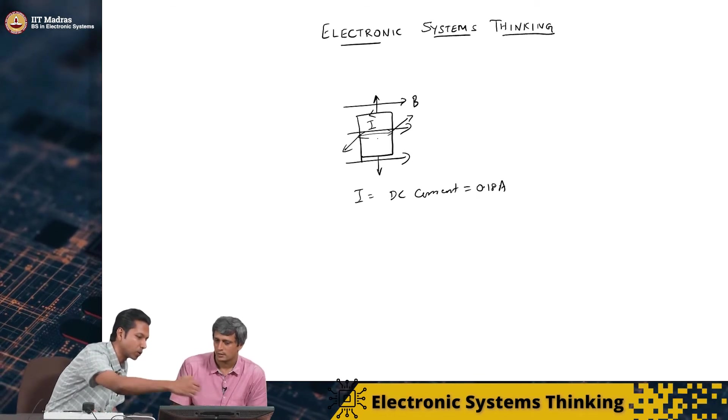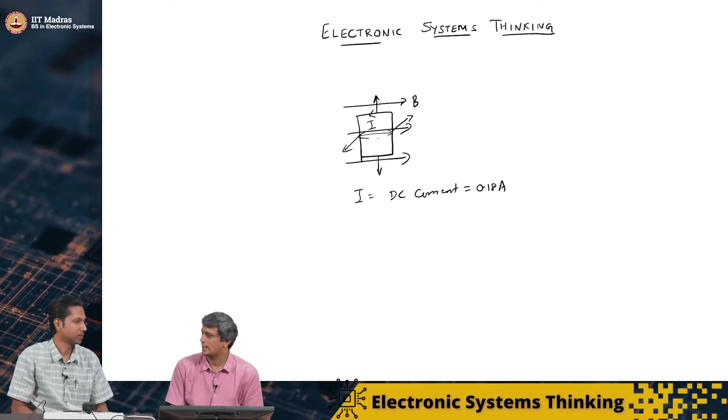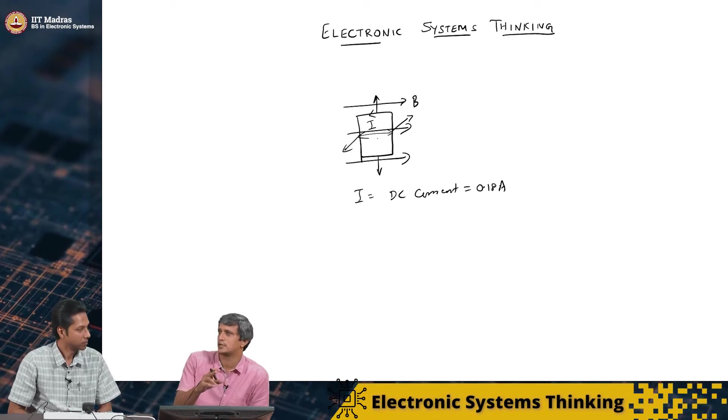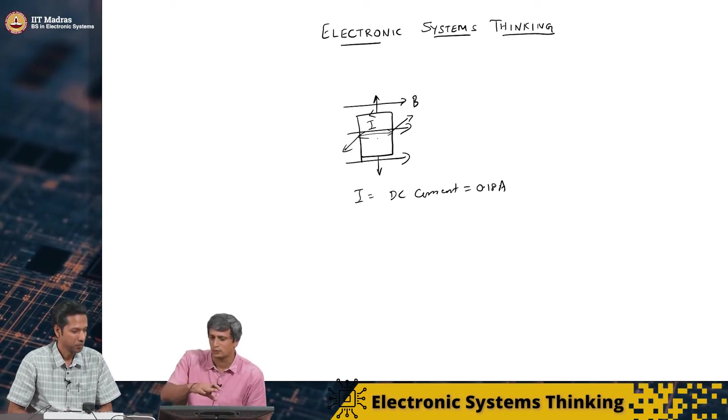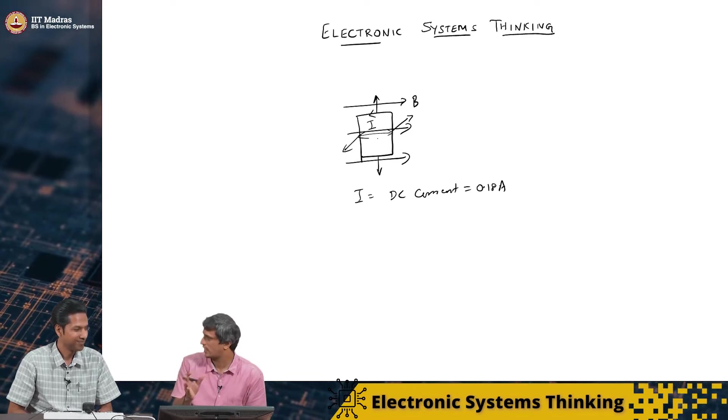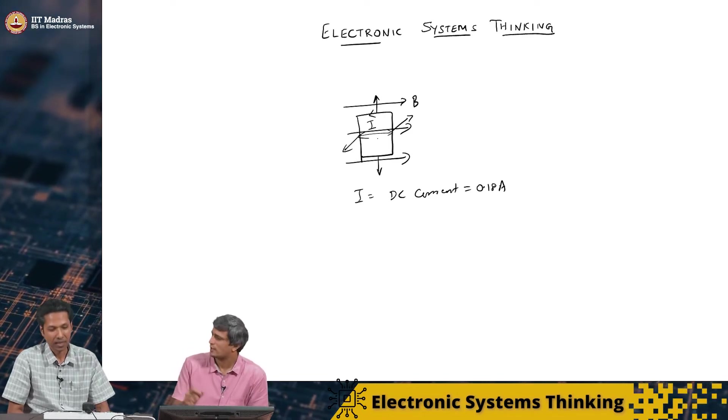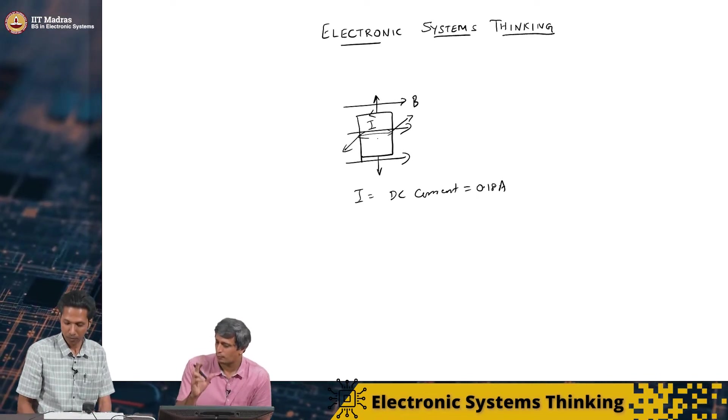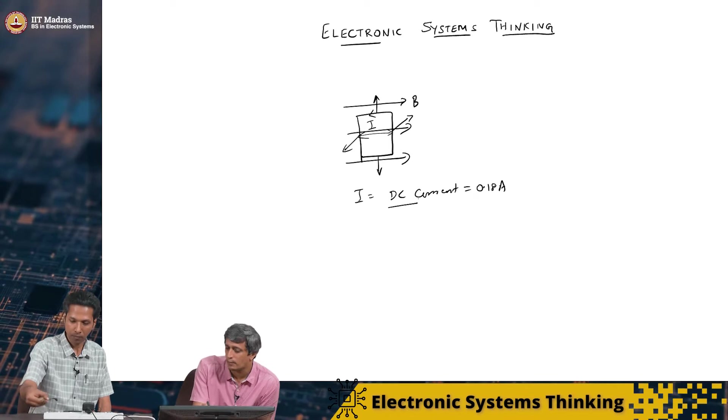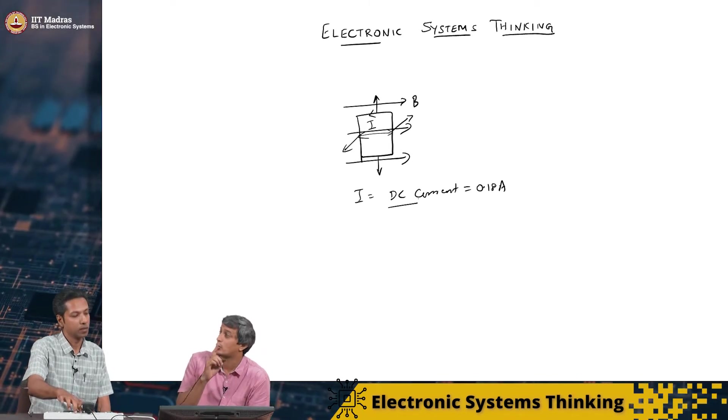So, all the forces balance each other and this coil cannot move, but it is going to rotate. You will have a BIL into the distance here, which is going to give you a torque, right? And that is essentially going to lead to the rotation of this fan. So, there will be a spindle or something to hold this mechanically. Exactly. So, it is a more complicated thing as how you allow it to rotate and pass current and all. That is how a motor is designed very carefully.